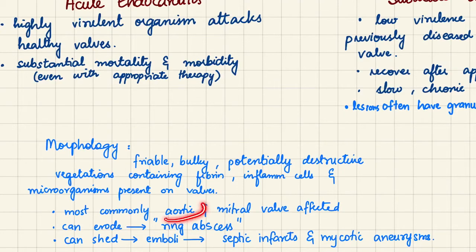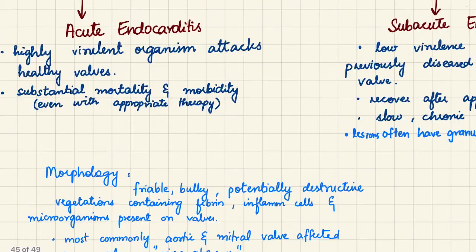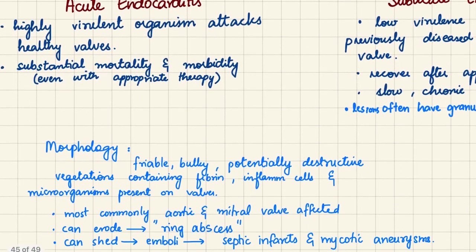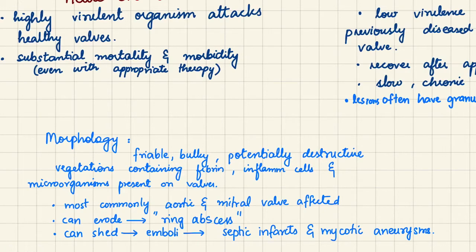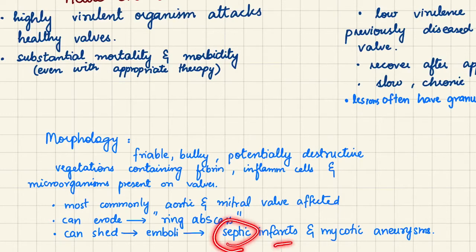Most commonly the aortic and mitral valves are affected, but in IV drug abuse the tricuspid valve is most commonly affected as it is the first valve venous blood encounters. Vegetations on the endocardium or valve can erode the underlying surface causing abscess formation called a ring abscess. These vegetations can also shed and form emboli that get stuck in end arteries, causing septic infarcts because microorganisms from the dislodged vegetations infect the infarcted tissue.